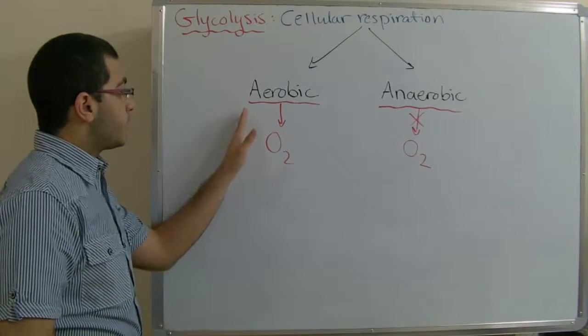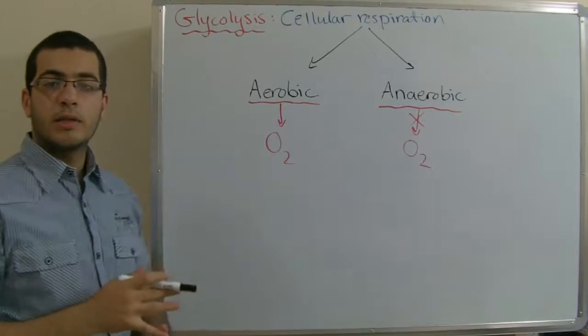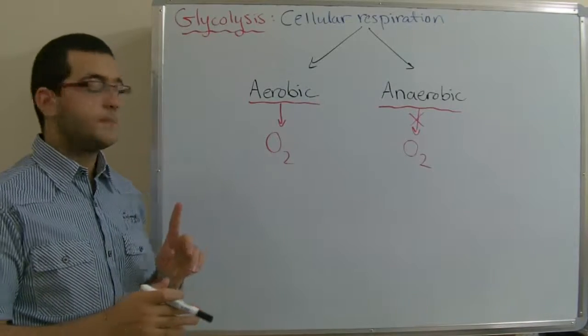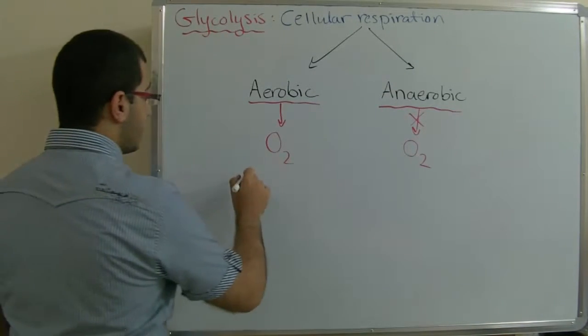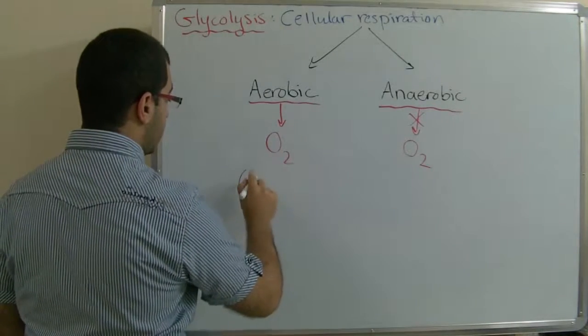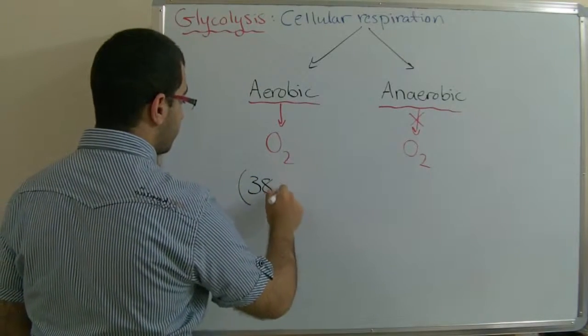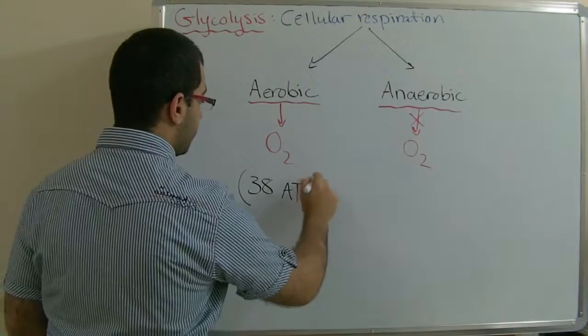The aerobic respiration includes glycolysis, Krebs cycle, and electron transport chain. And it produces a large amount of energy, which is 38 ATP molecules.